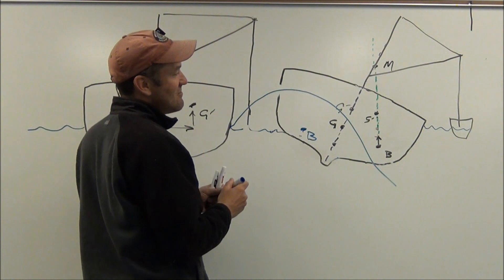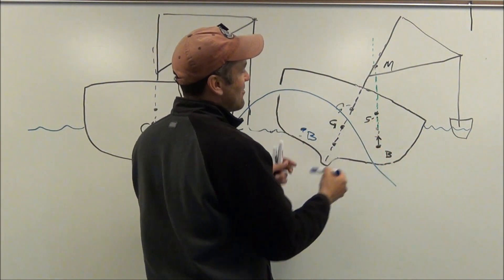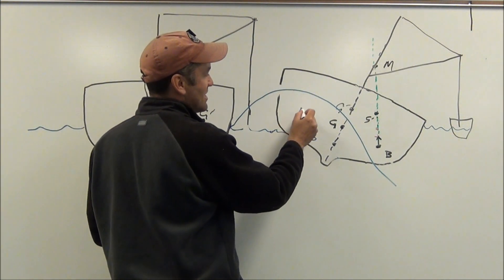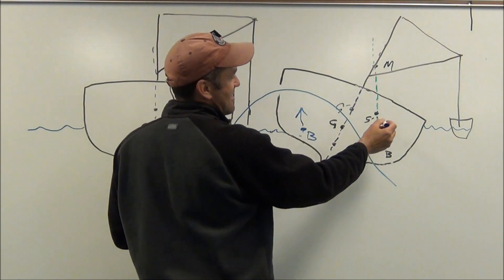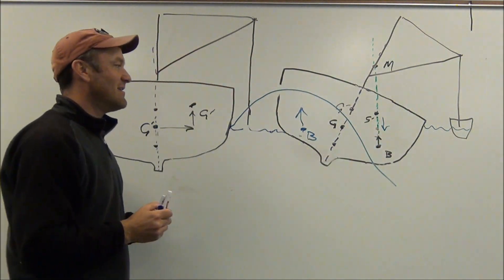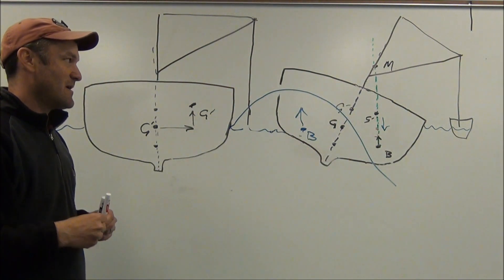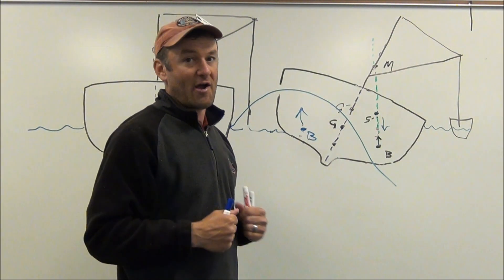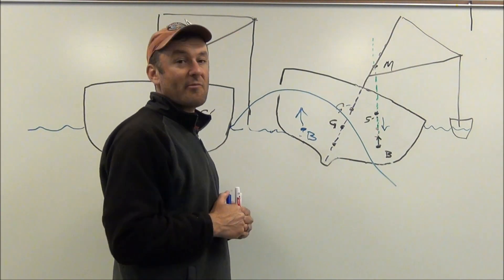And then you have, once again, buoyancy and gravity working against each other. The buoyancy's pushing up on the vessel here. Then you have gravity pulling down, which gives you a negative lever arm, and the negative righting arm. So the negative righting arm can topple the vessel.